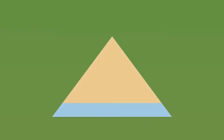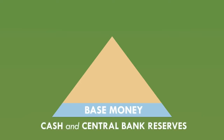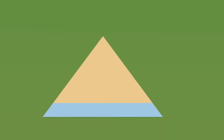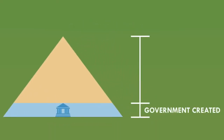The balloon model. Let's revisit the multiplier model from the last video. It describes the money system as having a base of base money — in the simplified version just cash, but in reality also the electronic central bank reserves that banks keep at the Bank of England. The base is made up of money created by either the Bank of England or the Royal Mint. The rest of the pyramid is made up of the third type of money — the electronic bank-created money. So the pyramid is split into a base of government-created money and a tower of bank-created money on top.